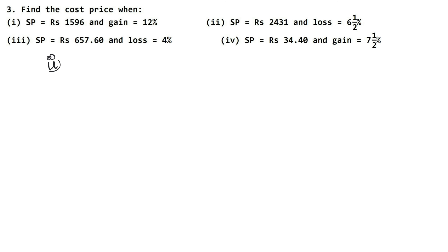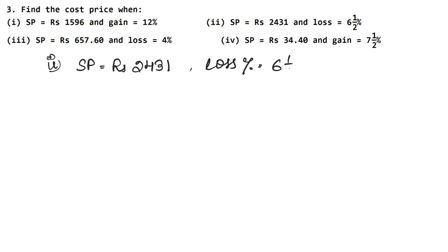Second part: SP is Rs. 2431 and loss percentage is 6 and 1/2 percent. So how will we do it? We have a mixed fraction, so we will first convert the loss percent to a fraction: 2 sixes are 12, plus 1 is 13, so loss percent = 13/2 percent.